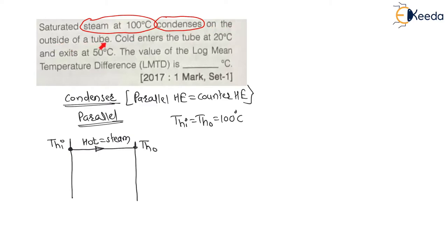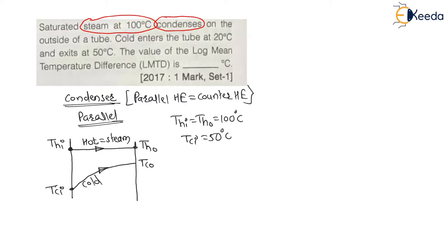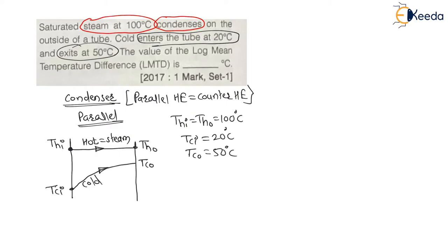The cold fluid enters the tube at T_CI and its temperature increases, exiting at T_CO. The cold fluid enters at 20 degrees Celsius and exits at 50 degrees Celsius. Therefore T_CI equals 20 degrees Celsius and T_CO equals 50 degrees Celsius.